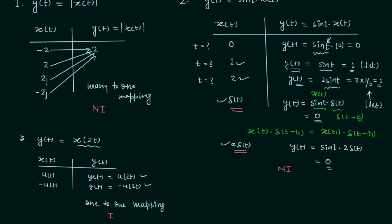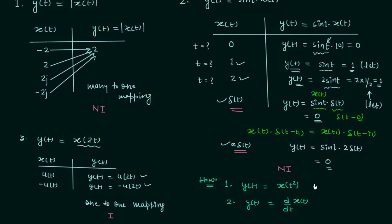This is all for this lecture and now we will move to the homework problems. In the first homework problem y(t) = x(t)² and in the second problem y(t) = d/dt of x(t). You are required to find out the nature of the two systems — whether they are invertible or non-invertible.